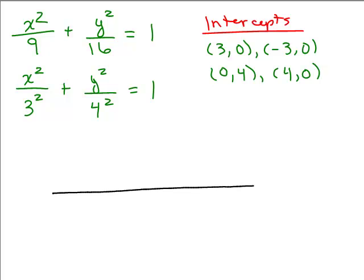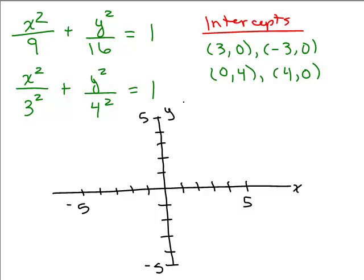So to graph, all we do is plot those intercepts. Let's say that's 5 and negative 5. We've got our x and y axis, we're going to plot 3, 0 and negative 3, 0. We're going to plot 4 and we're going to plot negative 4. And that's good enough to give us an idea of what these are. Now sometimes you're asked to actually label the intercepts. If you are, then just make sure you write down that's 3, 0, that's 0, negative 4, et cetera.